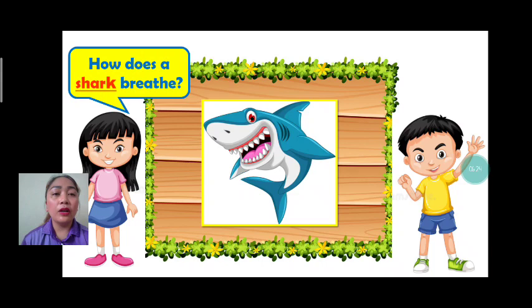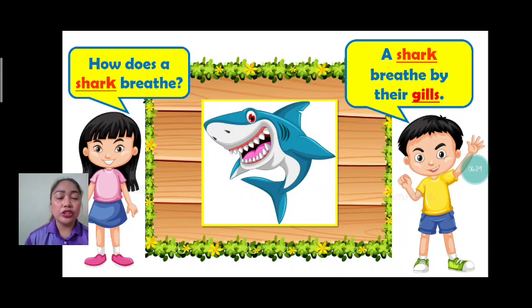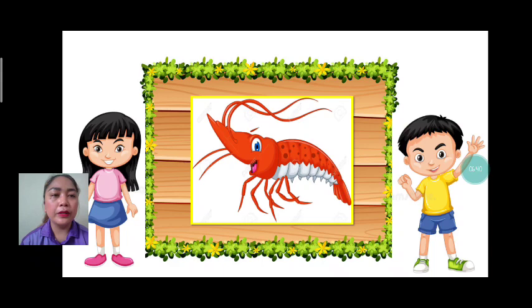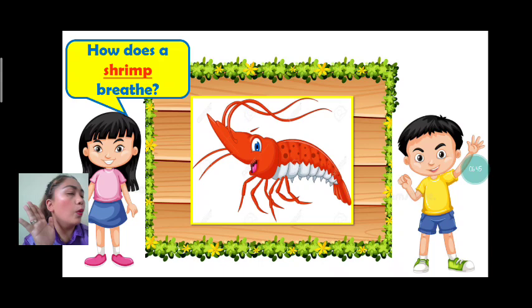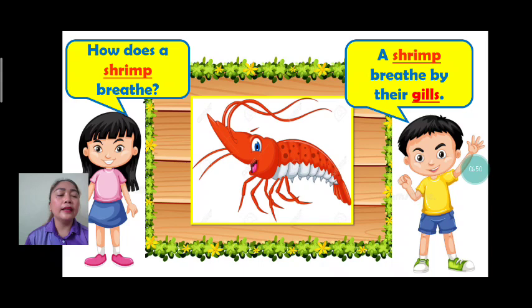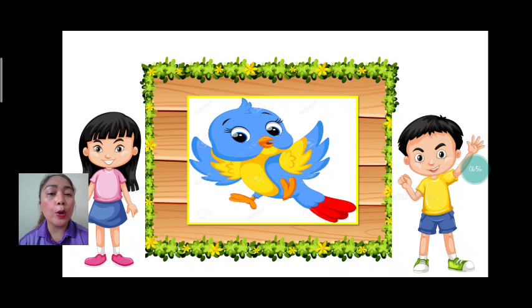Next, what is it? Shark. How does a shark breathe? Together: a shark breathes by their gills. One more time: a shark breathes by their gills. Very good. Next we have shrimp. How does a shrimp breathe? A shrimp breathes by their gills. Again: a shrimp breathes by their gills. Good job.